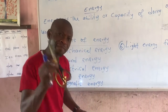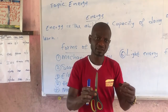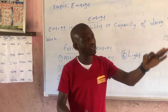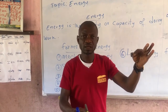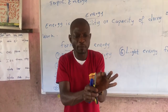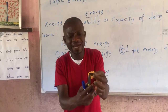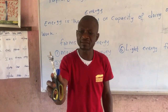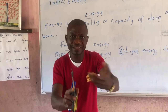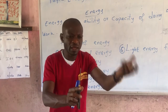Now, magnetic energy. Magnetic energy is energy possessed due to a magnet attracting a metal. This is a magnet and this is a metal — iron. When you bring this iron close to this magnet, you see it gets attracted. That pulling force is what we call magnetic energy.